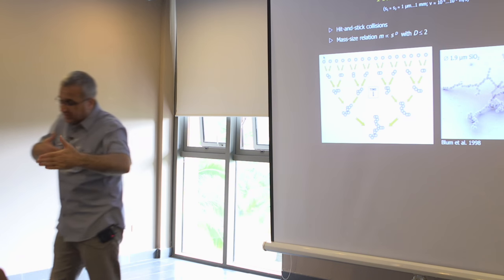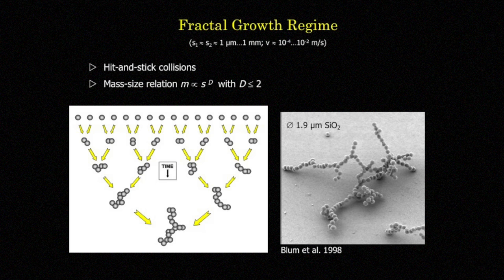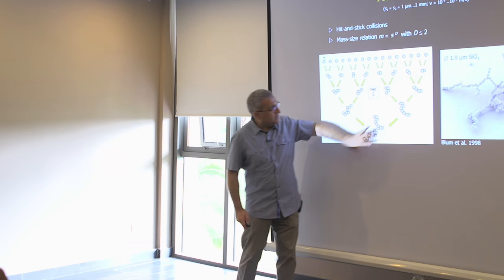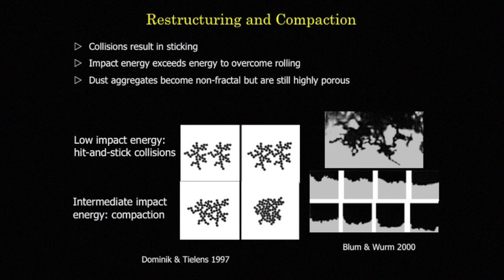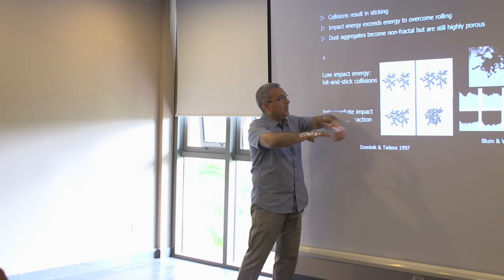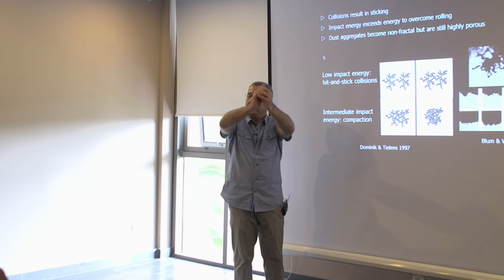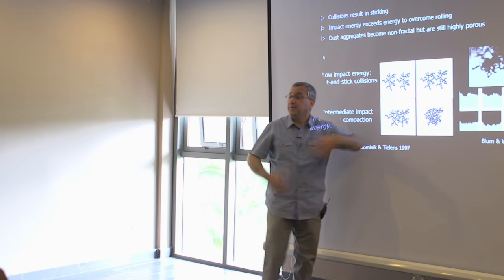Two dust particles gently sit next to each other, they see another one and another one, and they form these fractal-sized objects. These fractal-sized objects are still heavily coupled to the gas because their masses are small. They move around; sometimes they hit and break each other apart, sometimes they gently merge and become a bigger aggregate. This process continues until the mass and size of the dust aggregate becomes large enough that when they hit each other, they roll each other.